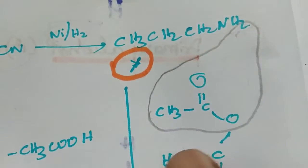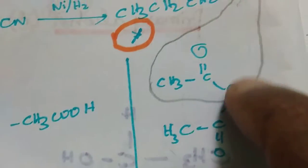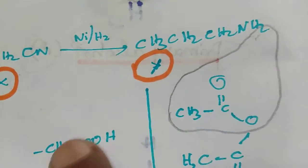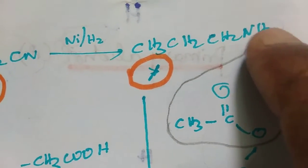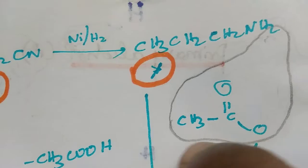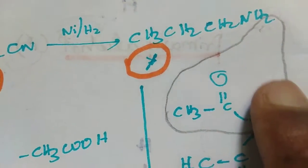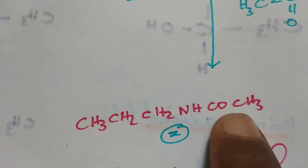This Y-compound is reacted with acetic anhydride, it is the removal of acetic acid. Here two hydrogen atoms are present, one hydrogen atom will take, it is the removal of acetic acid. This is the final product Z.